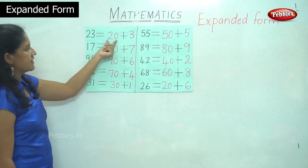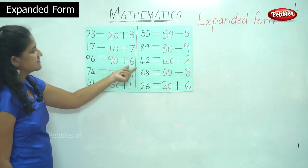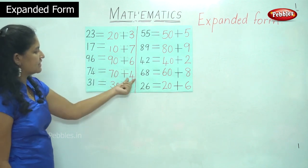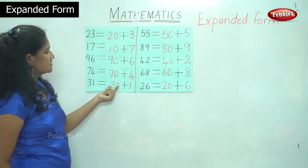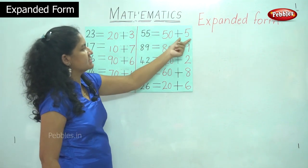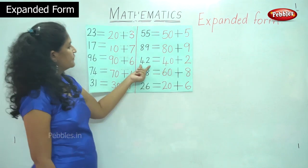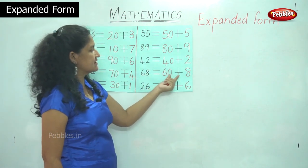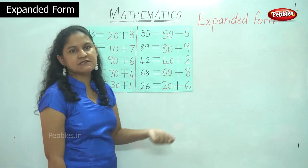So for 23 it is 20 plus 3. For 17 it is 10 plus 7. For 96 it is 6 ones and 9 tens or 90. For 74 it is 7 tens or 70. For 31 it is 3 tens or 30 plus 1. For 55 it is 5 tens or 50 plus 5. For 89 it is 8 tens or 80 plus 9. For 42 it is 4 tens or 40 plus 2. For 68 it is 6 tens or 60 plus 8. And for 26 it is 2 tens or 20 plus 6 ones.